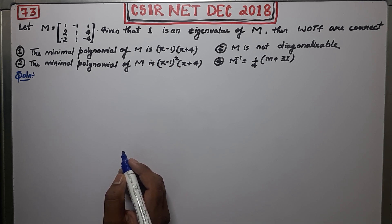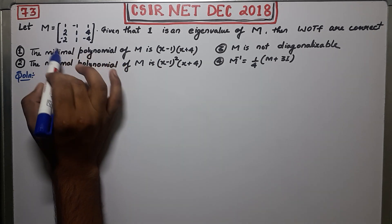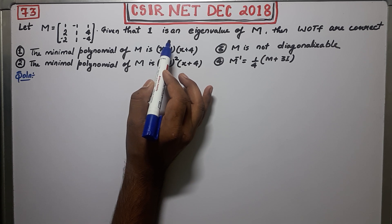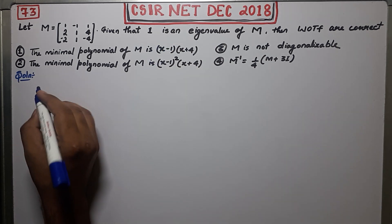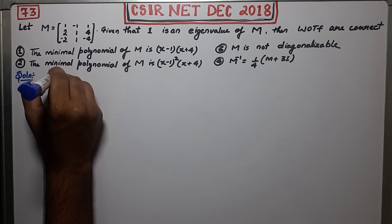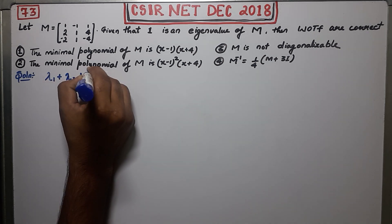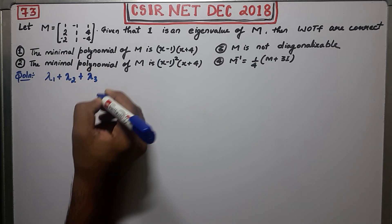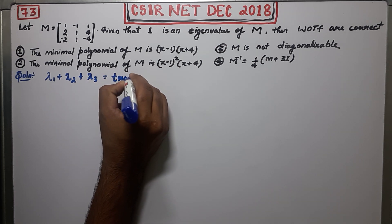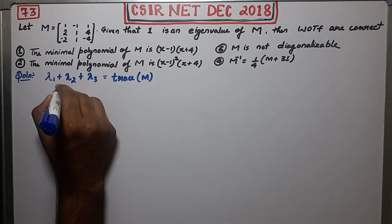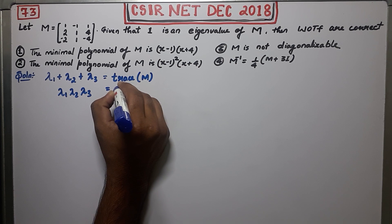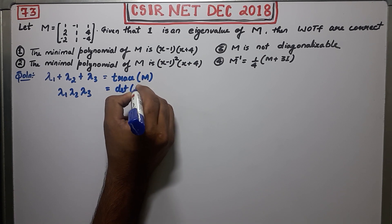Before proceeding, first find the remaining eigenvalues of this matrix. It is given that 1 is an eigenvalue, so we have to find the remaining ones. One thing you know about matrices is that the sum of the eigenvalues — if we assume lambda 1, lambda 2, lambda 3 are the eigenvalues — their sum equals the trace of the matrix.